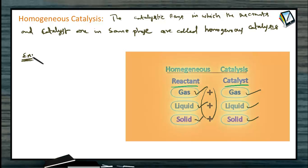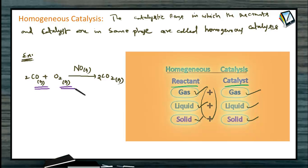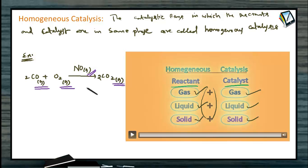A simple example: 2 moles of carbon monoxide plus 1 mole of oxygen forms 2 moles of carbon dioxide. The catalyst is nitrogen oxide (NO), which is also present as a gas. Since reactants and catalyst are all in the same gaseous phase, you cannot separate or distinguish carbon monoxide from nitrous oxide. This is called homogeneous catalysis.